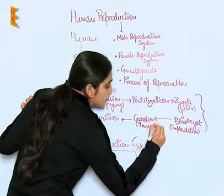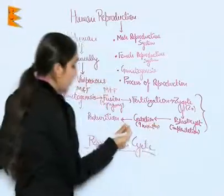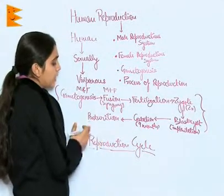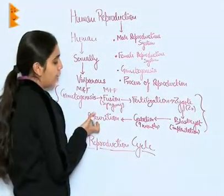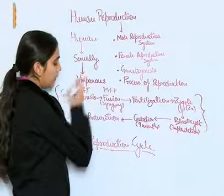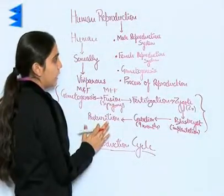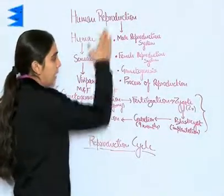After implantation comes gestation, which is nine months in human beings, followed by parturition — that is, delivery of the baby. This is the reproduction cycle in human beings.